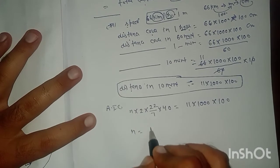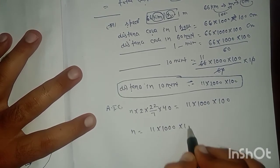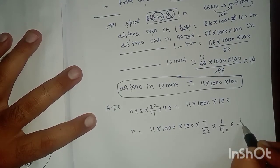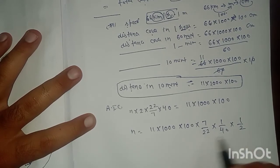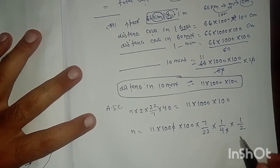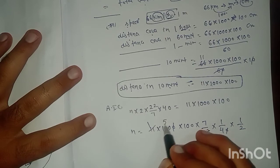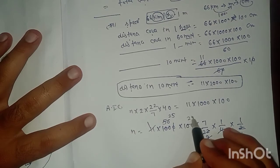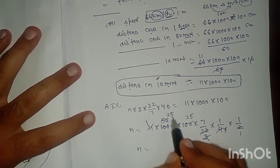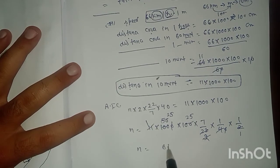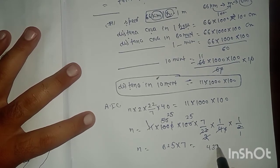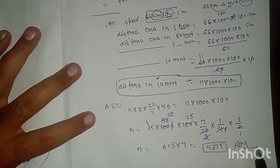So n = (11 × 1000 × 100 × 7) / (22 × 40 × 2). Canceling terms: n = 25 × 25 × 7 = 4375. This is the answer.